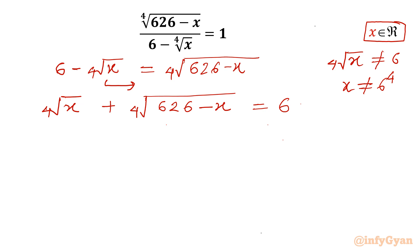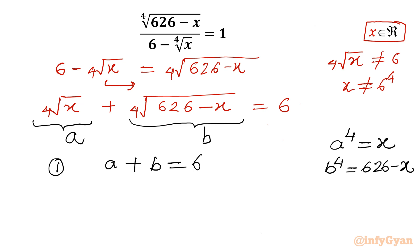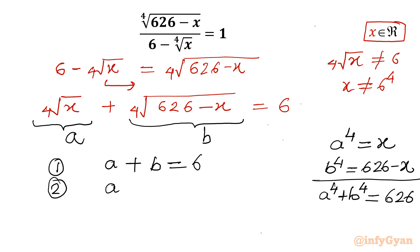This is one standard equation where we will use substitution. We will call the 4th root of x as A and the whole radical 4th root of (626 minus x) as B. The first equation we get is A plus B equal to 6. Using substitution, A to the power 4 equals x, and B to the power 4 equals 626 minus x. Adding both equations gives us A⁴ plus B⁴ equal to 626, which is our second equation.